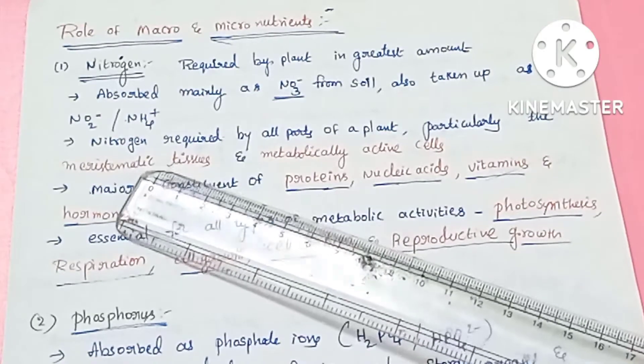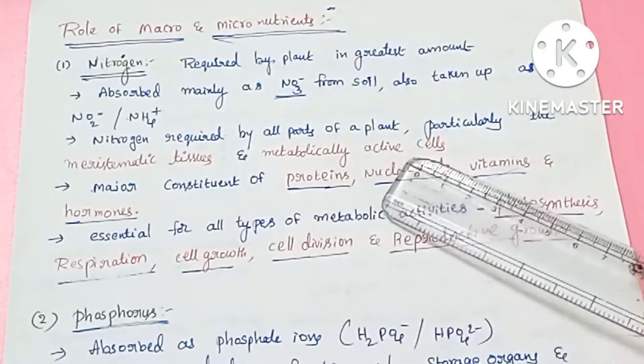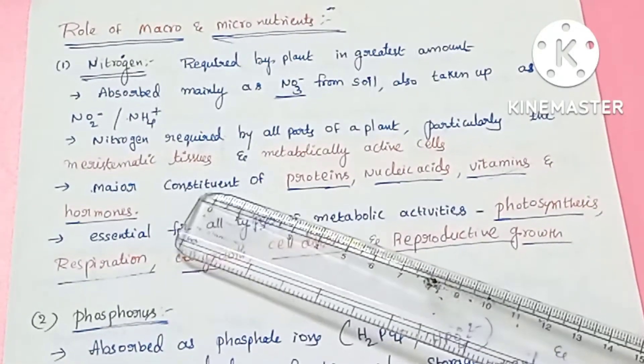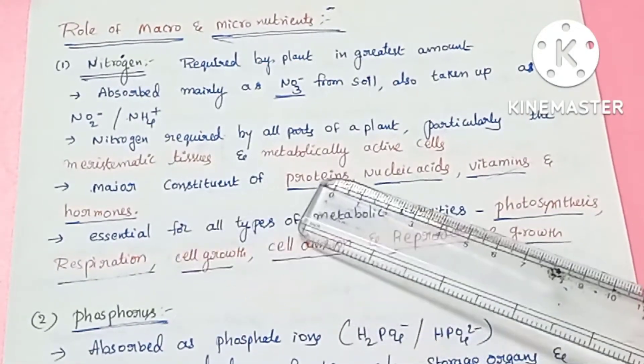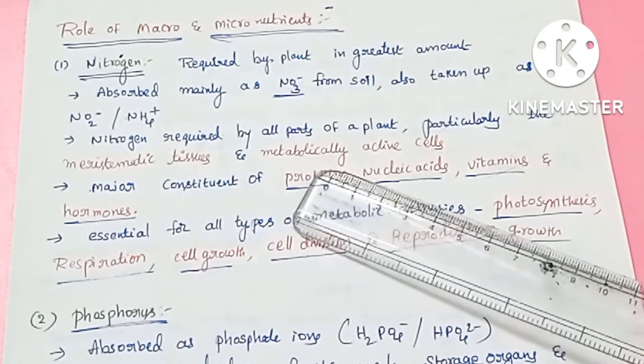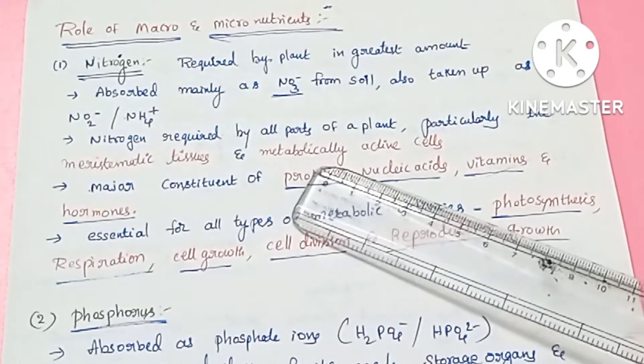In most plants, it is used in the NO3- form, and plants have to absorb nitrogen in the NO3- form.